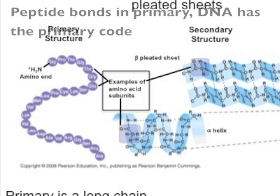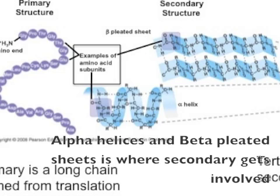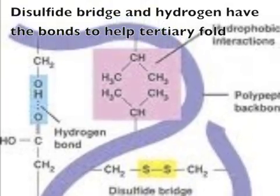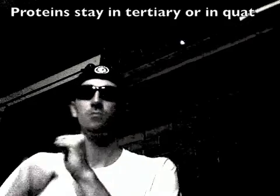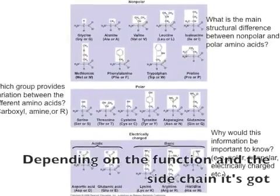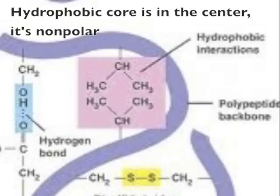Peptide bonds in primary structure — DNA has the primary code. Alpha helices and beta-pleated sheets are where secondary structure gets involved. Disulfide bridges and hydrogen bonds help tertiary fold — can't get enough — with van der Waals forces too. Hydrophobic cores are in the center, non-polar.